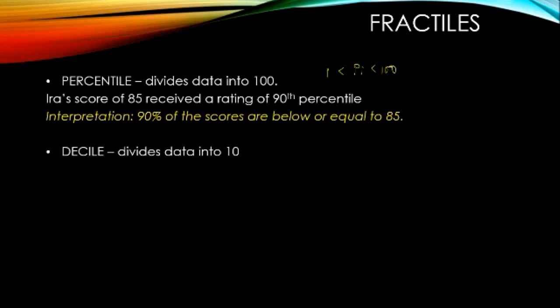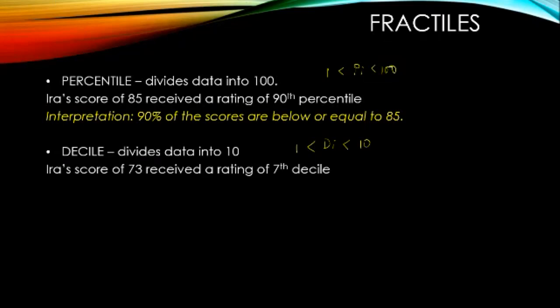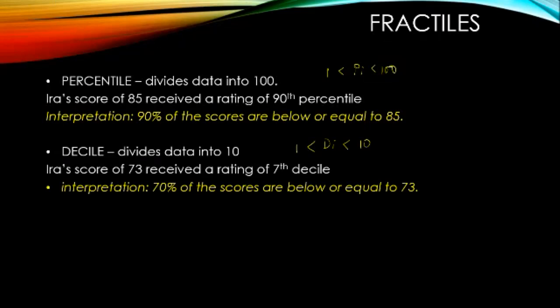The decile divides data into 10. The rank of a decile ranges from 1 to 10 — there cannot be a 12th or 15th decile. If Ira's score of 73 received a rating of the 7th decile, the equivalent in percent is 70%, meaning 70% of the scores are below or equal to 73. Please remember the phrase 'below or equal.'